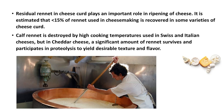Residual rennet in cheese curd plays an important role in the ripening of cheese. It is essential that lower than 50% of the rennet used in cheesemaking is recovered in some varieties of cheese curd. Curd rennet is destroyed by high cooking temperatures used in Swiss and Italian cheeses, but in cheddar cheese a significant amount of rennet survives and participates in proteolysis to yield desirable texture and flavor.